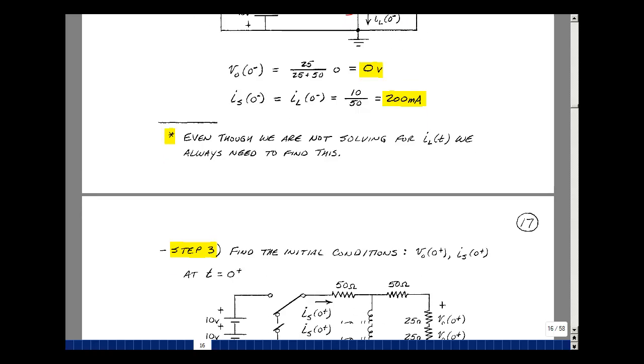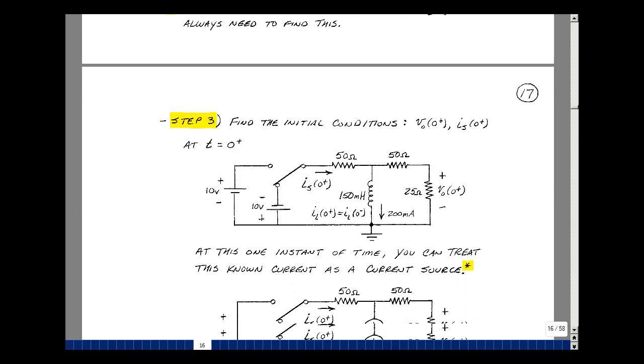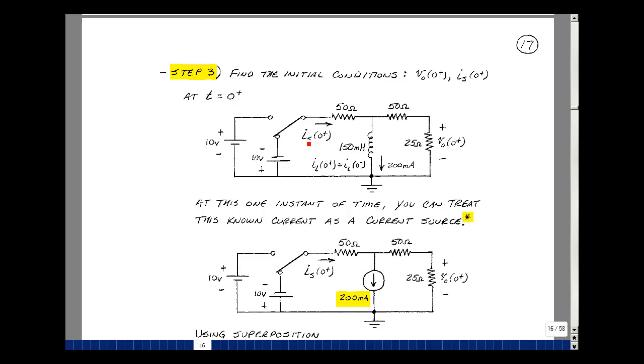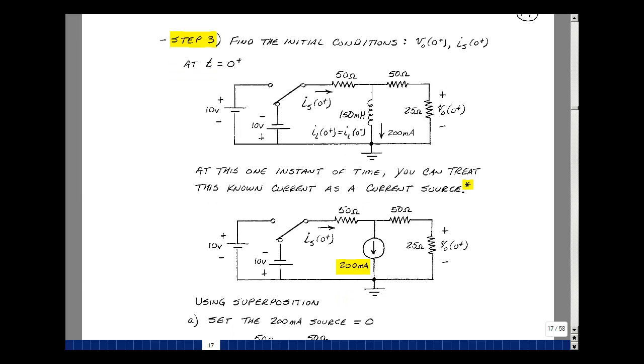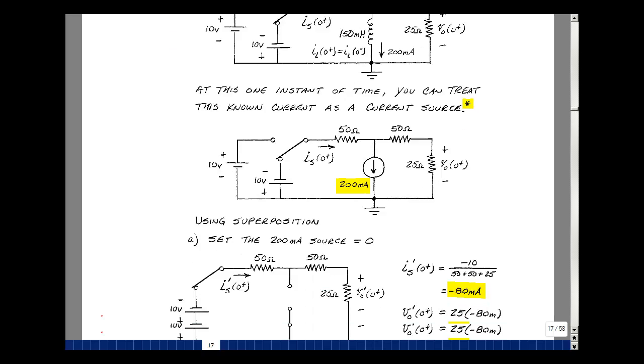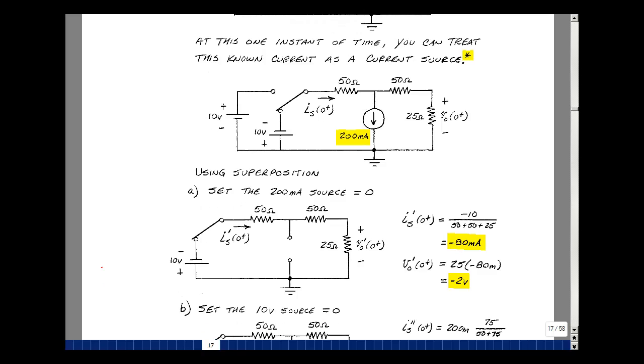Our third step is to let the switch change state, coming from the first position to the second position. Now we're going to find our two variables of interest, Vout and I sub S, using the fact that the current that was flowing in this inductance at zero minus was 200 milliamps, and that must still be true at zero plus. We have quite a few different ways of analyzing this circuit. Since I know the current in this element is 200 milliamps at this one instant in time, I can model that as a current source of 200 milliamps. It's called a substitution theorem in circuit theory. It would allow me to use superposition to solve this problem.